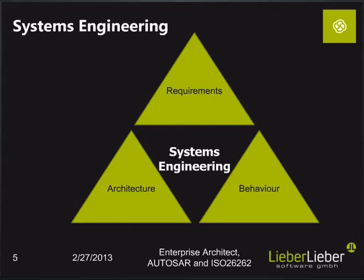The third building block in systems engineering is behavior. Behavior is also contained in the requirements texts, but what is meant here is a more formal behavior — like a behavioral model in UML, for example a state chart model, or a behavioral model in MATLAB Simulink — from which code or test cases can be derived by tooling.